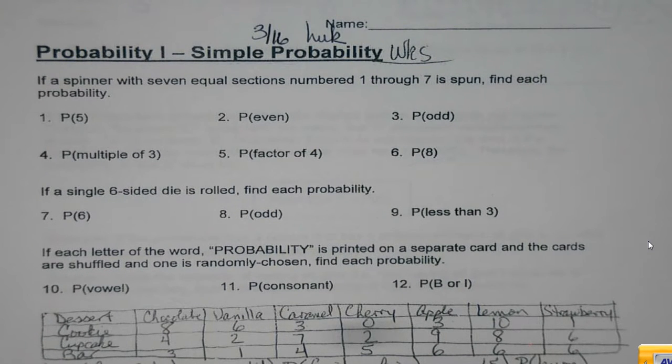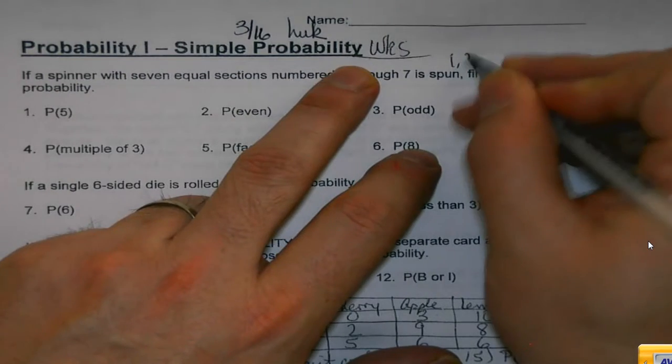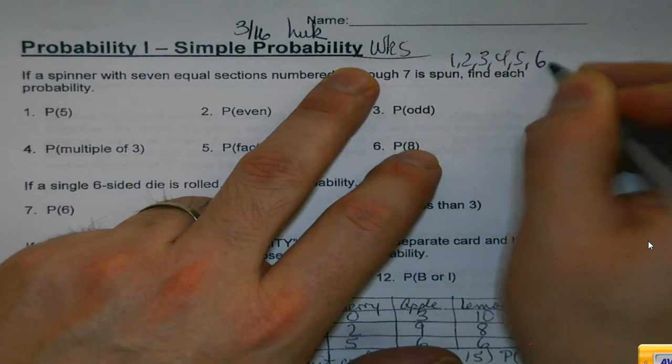So if a spinner with seven equal sections, and no, I am not drawing again, numbered one through seven is spun, find each probability. Okay, this is real straightforward. I mean, spinner with one through seven, I can just jot down the numbers if I'm more visual.